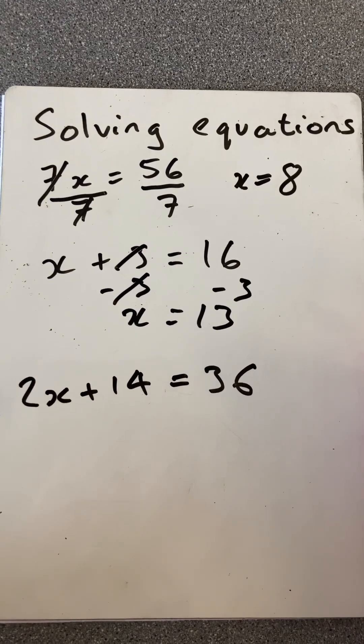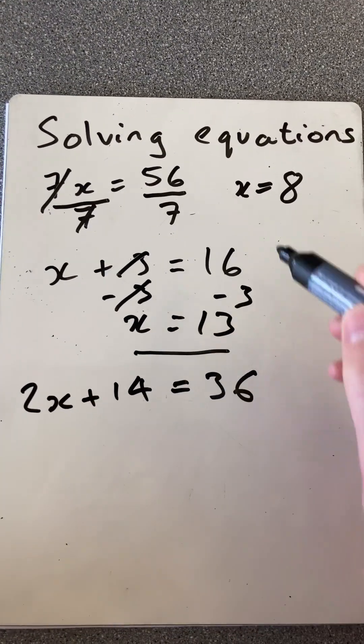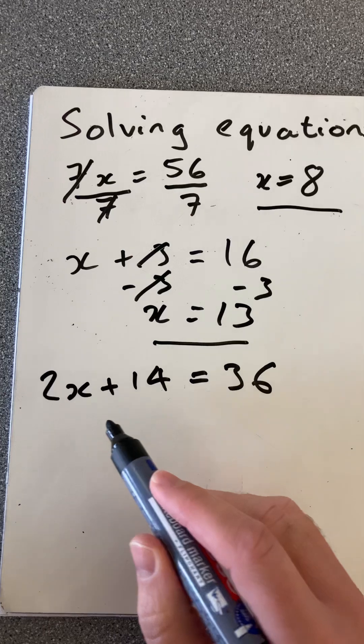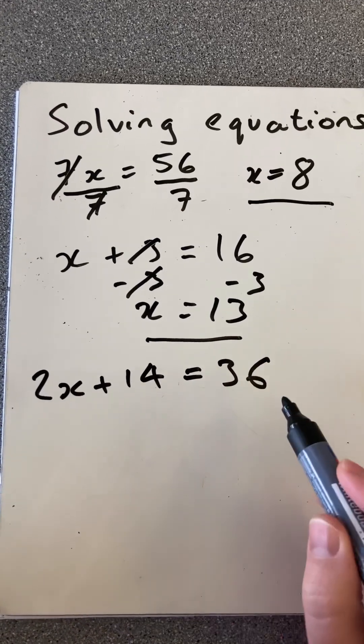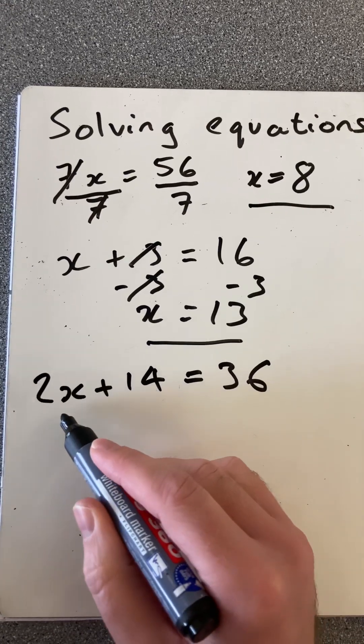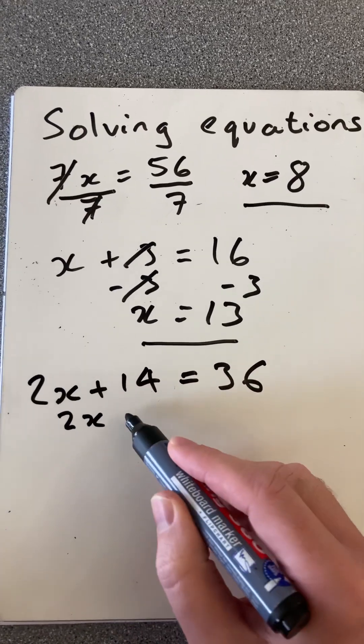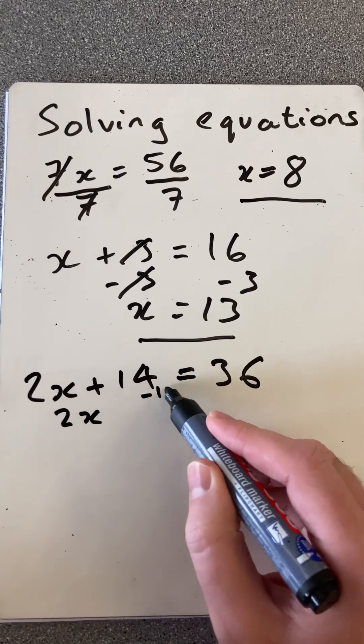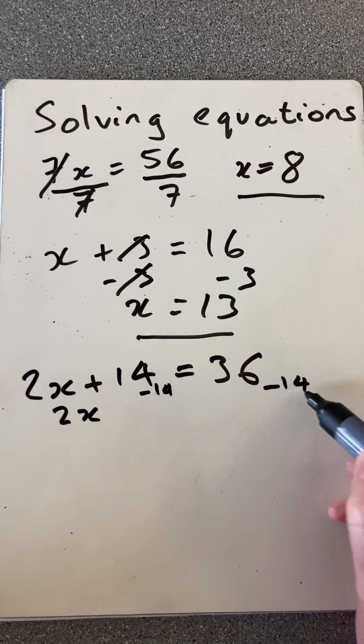Here, we're going to use a two-step method to solve this one. The first thing you do is try and isolate the variable. So I'm going to leave the 2x, but I'm going to subtract 14 there, and subtract 14 there. So those will cancel, and 2x will equal 22.